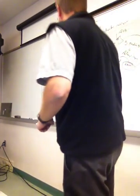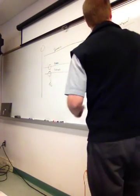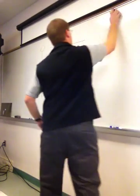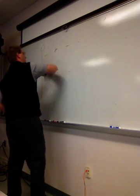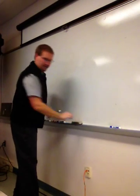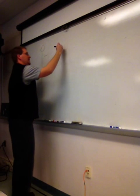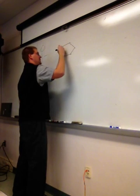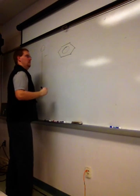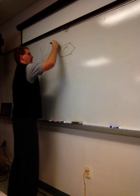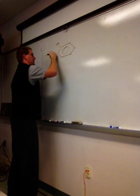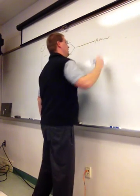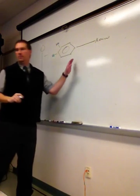What is the basic structure of the catecholamine molecule? There are three components: the benzene ring, the hydroxyl groups, and the amine side chain. Those are the three components.